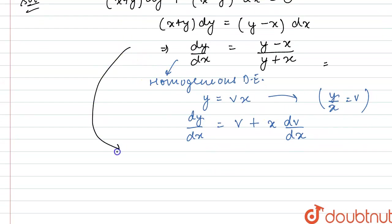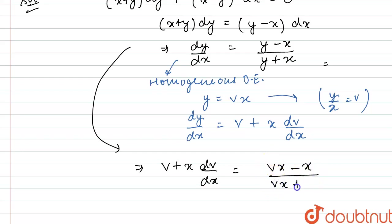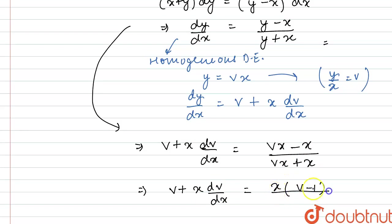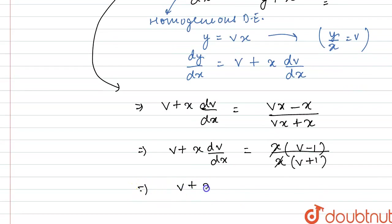Now substituting: v + x(dv/dx) = (vx - x) / (vx + x). Taking x common from the numerator and denominator, x cancels, giving v + x(dv/dx) = (v - 1) / (v + 1). Now take this v to the right hand side, so we get x(dv/dx) = (v - 1)/(v + 1) - v.